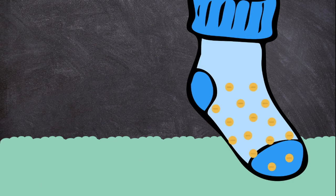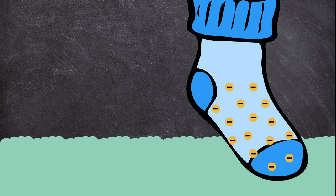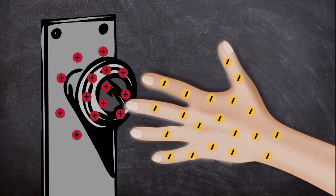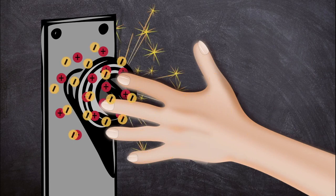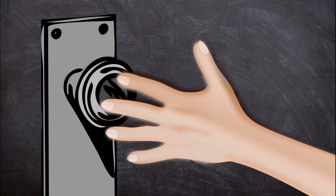Electrons have a negative charge. Now your socks are negatively charged. When you touch the doorknob, electrons jump from you to the knob to discharge. Now, both are neutral, which means they are not positively or negatively charged.